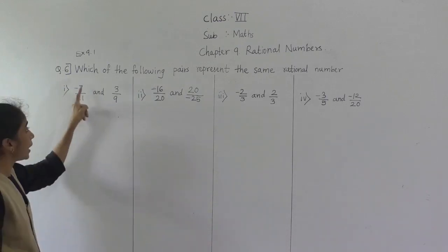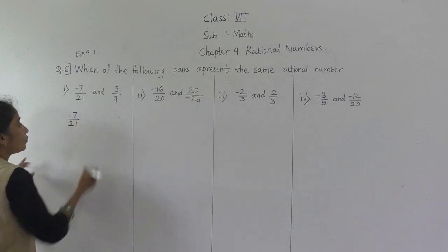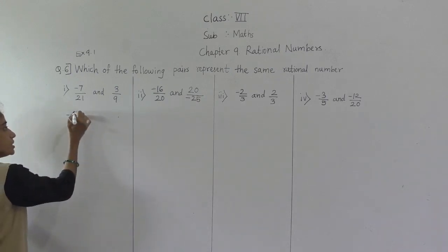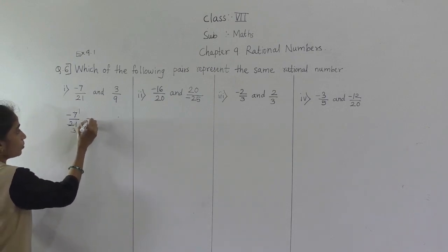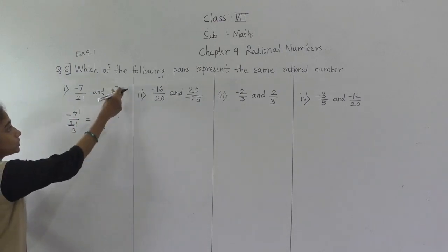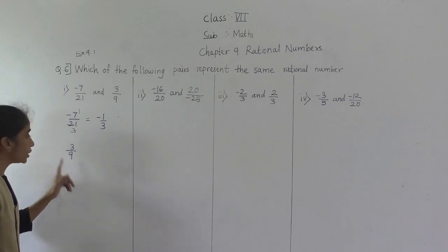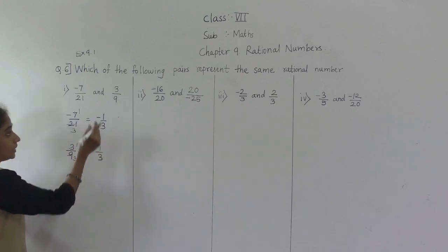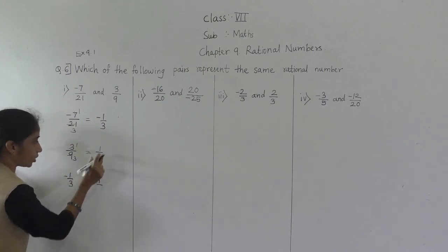Now the given question: minus 7 upon 21 and 3 upon 9. For minus 7 upon 21, we do the lowest term — 7 ones are 7, 7 threes are 21 — so we get minus 1 upon 3. For 3 upon 9, we reduce: 3 ones are 3, 3 threes are 9, giving us 1 upon 3.